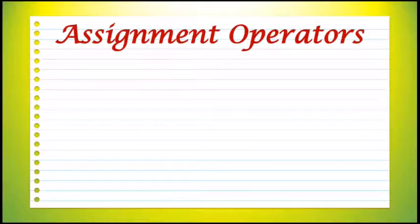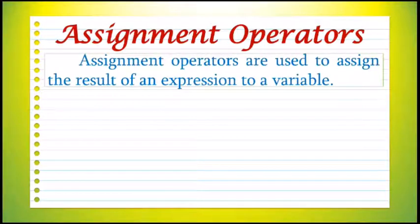The next type is assignment operators. Assignment operators are used to assign the result of an expression to a variable. We know the usual assignment operator, the equal to symbol, which is used to save the result into a variable after calculating the expression.